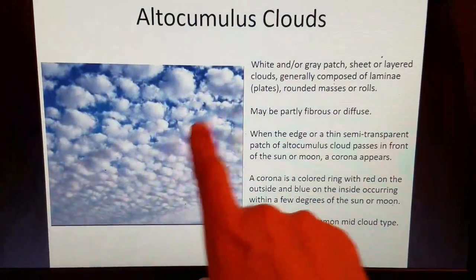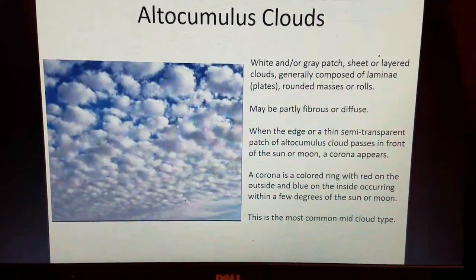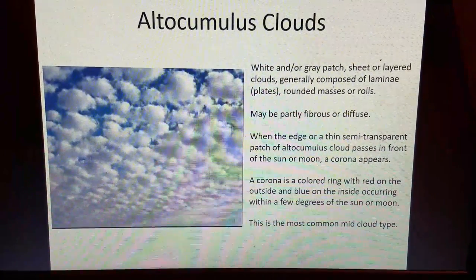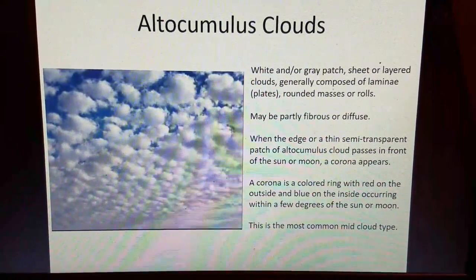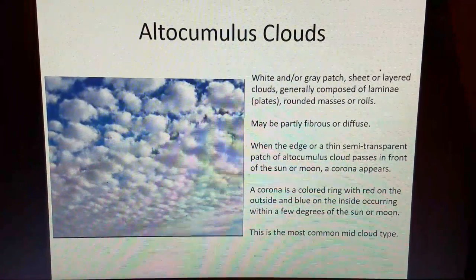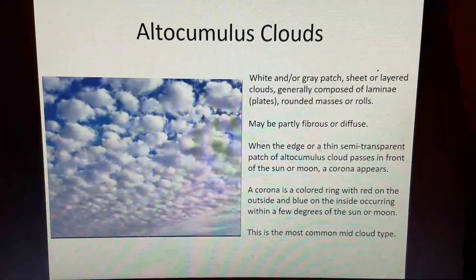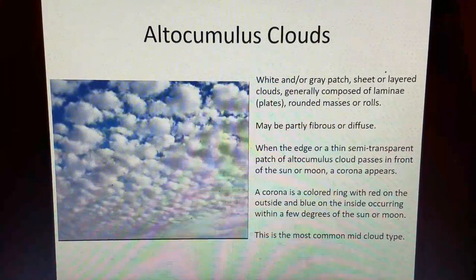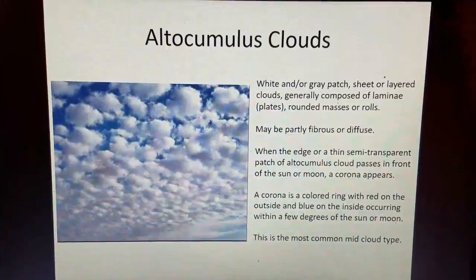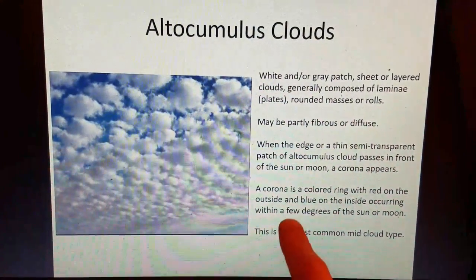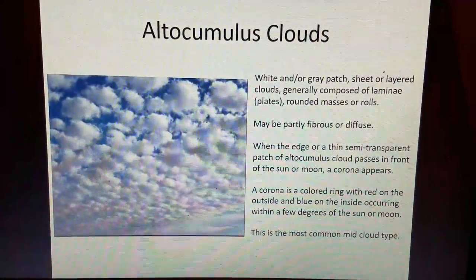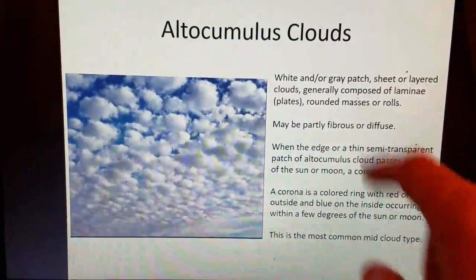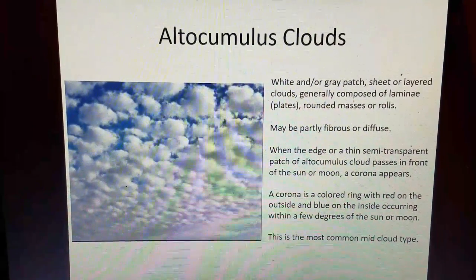Altocumulus clouds — notice how they're patchy like sheep's wool. They're white and/or gray patch, sheet, or layered clouds generally composed of laminae (plates), rounded masses, or rolls. They may be partly fibrous or diffuse. When the edge of a thin, semi-transparent patch of altocumulus passes in front of the sun or moon, you get those colored rings known as coronas — a colored ring with red on the outside and blue on the inside occurring within a few degrees of the sun or moon. Altocumulus clouds are the most common mid-cloud type.